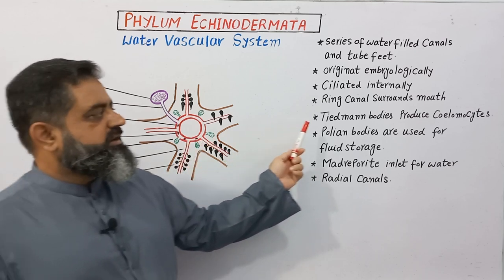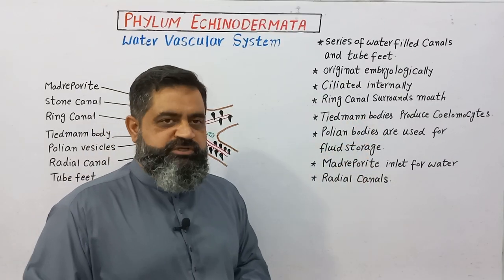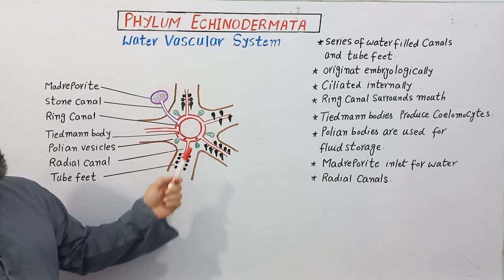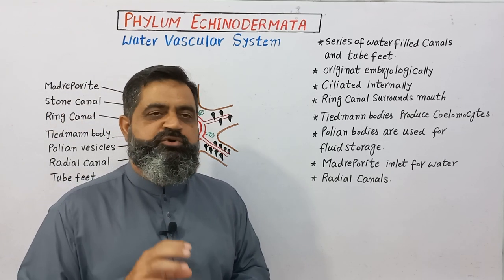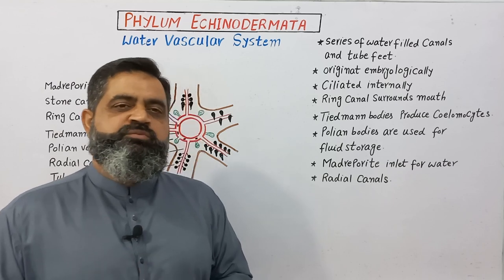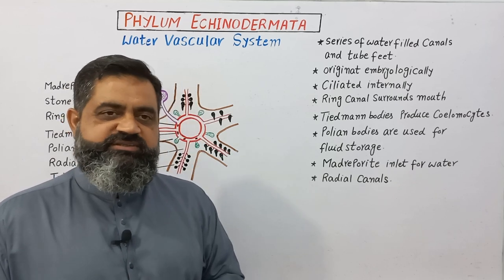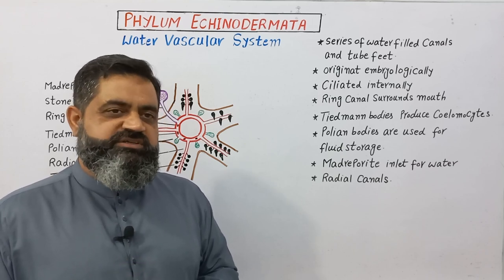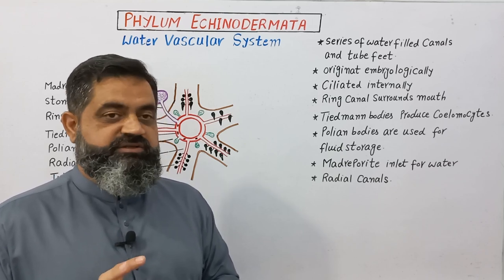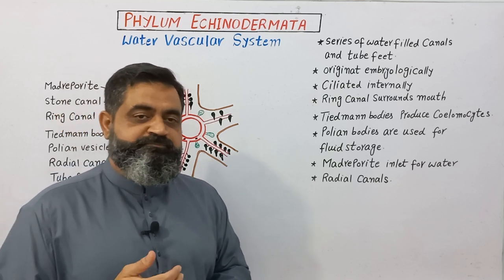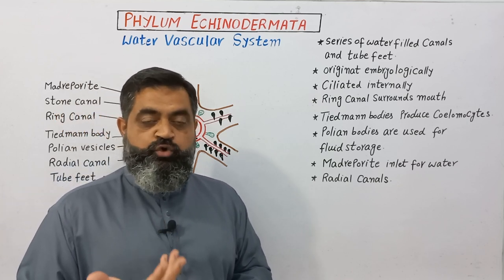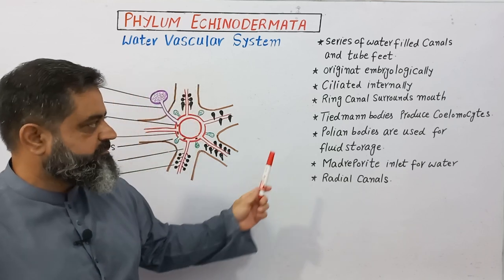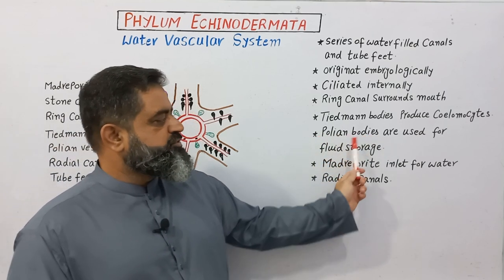Tiedemann bodies are attached to the ring canal and produce coelomocytes. Coelomocytes are specialized white blood cells present in the coelom, specialized for the defensive mechanism — they engulf microbes like viruses and bacteria to protect the animal from certain infections.